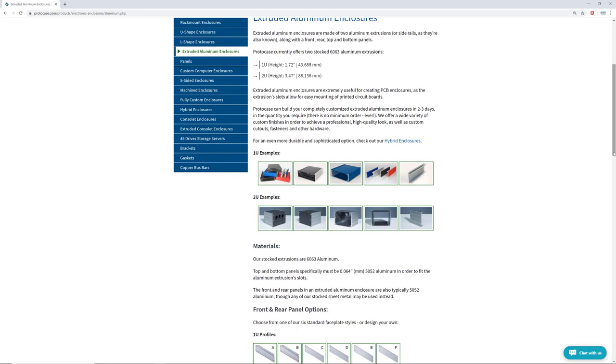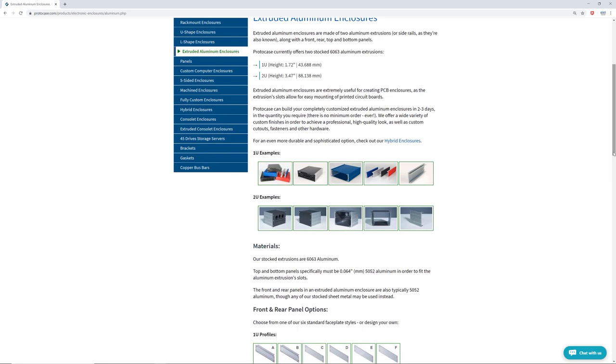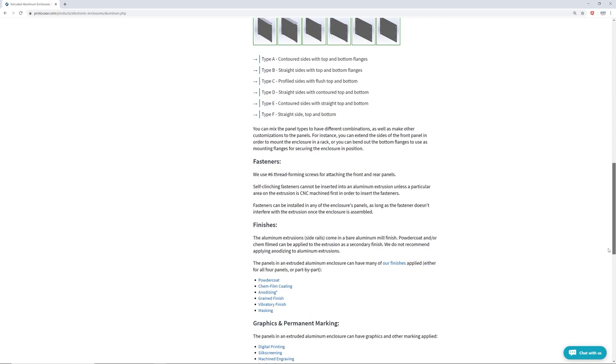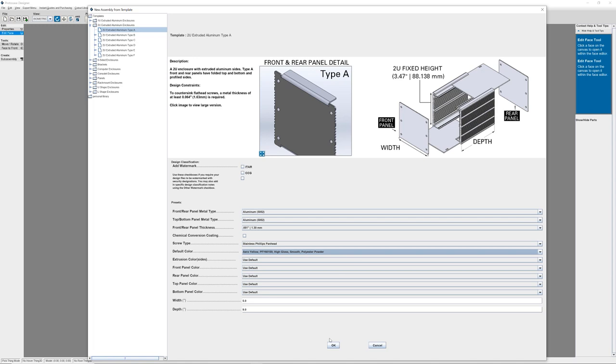Check out our website for a full list of dimensions on our 1U and 2U extrusions, along with design resources that will help you with your next custom sheet metal project. Be sure to also check out our in-house CAD software, Protocase Designer, that contains templates for our extruded aluminum enclosures.